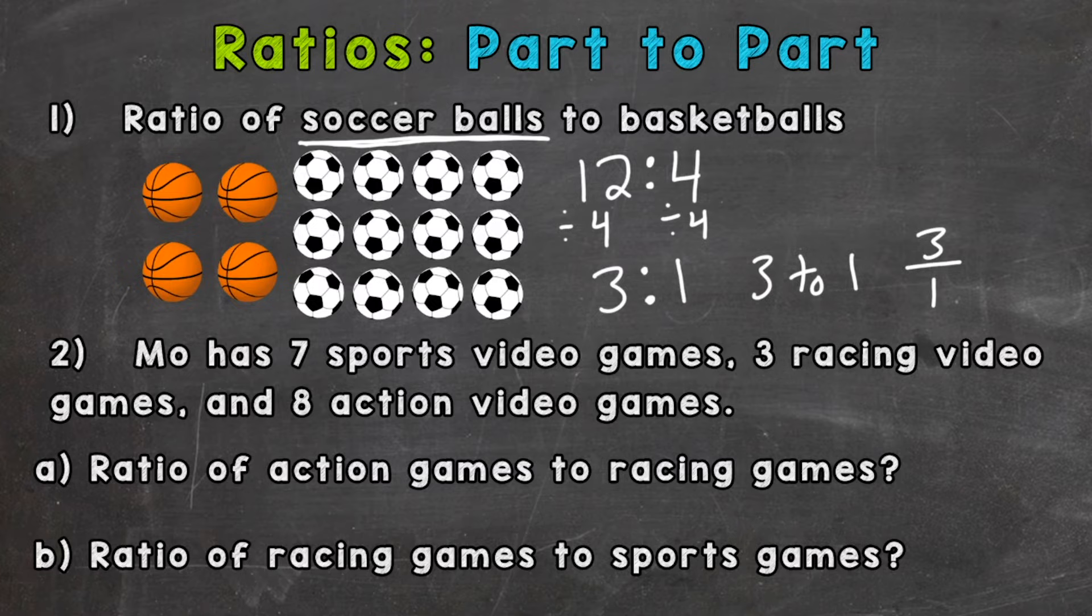Let's take a look at number two. Mo has 7 sports video games, 3 racing video games, and 8 action video games. So part A, what is the ratio of action games to racing games? So this is another part-to-part ratio because the action games are part of all of his games and the racing games are a part of the whole group of all the games.